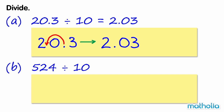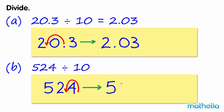B. 524 divide 10. Shifting the decimal point one place to the left gives 52.4. So 524 divide 10 equals 52.4.